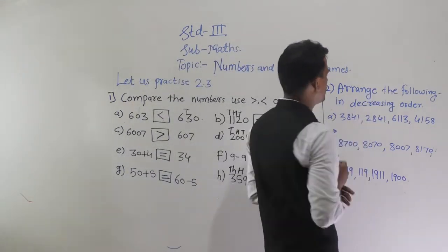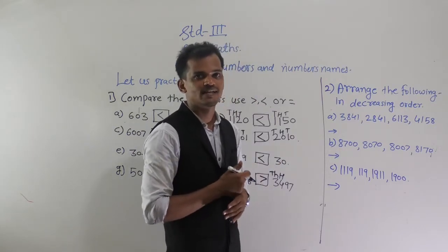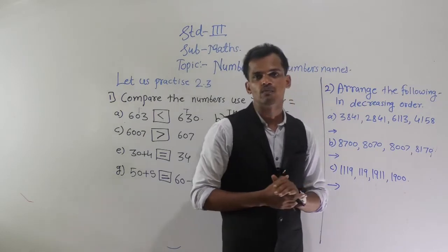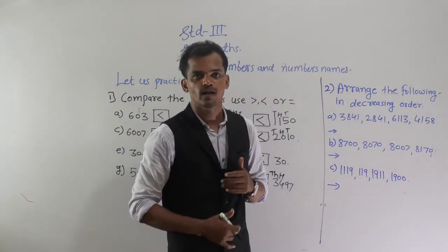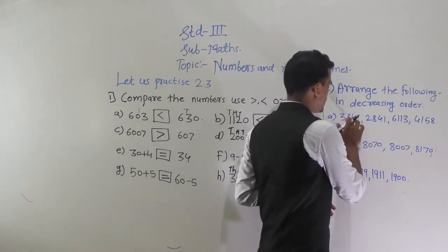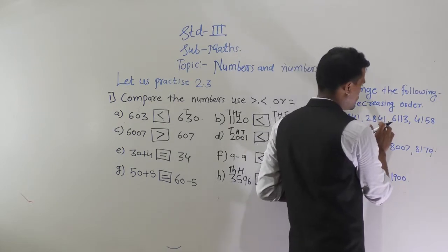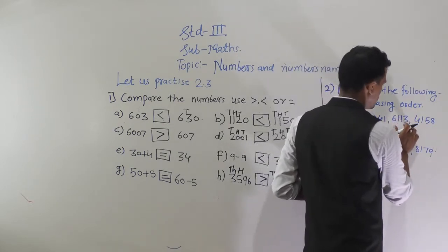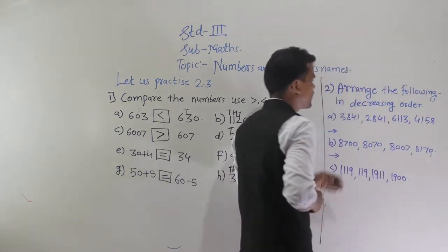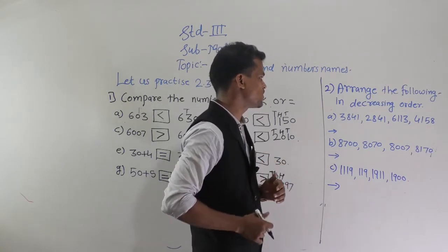The next instruction is to arrange the following numbers in decreasing order. Decreasing order means descending order — we have to arrange the given numbers from big to small. The numbers are: 3841, 2841, 6113, and 4158.